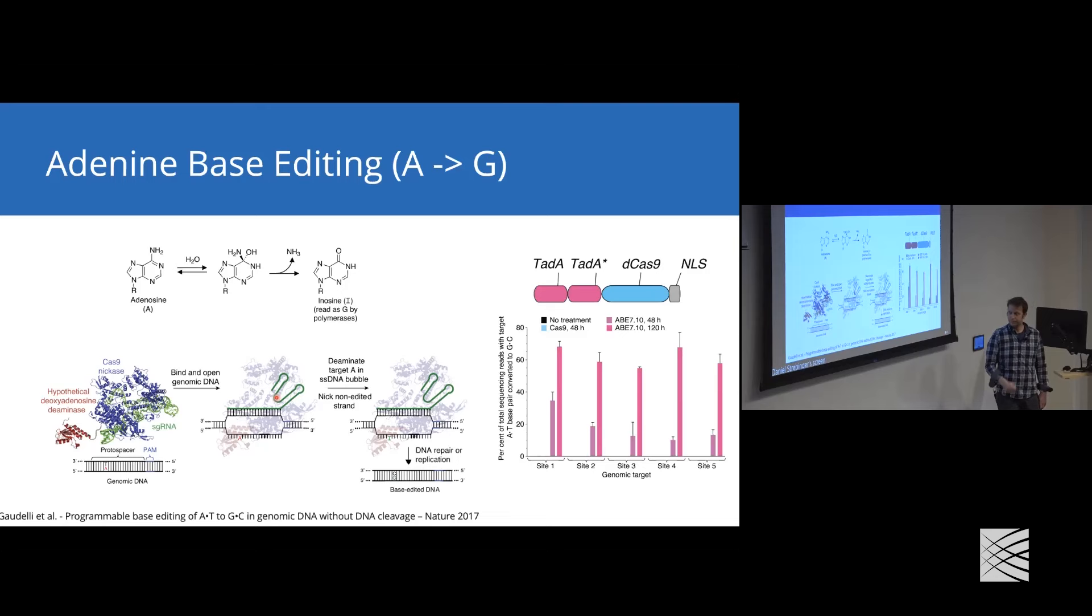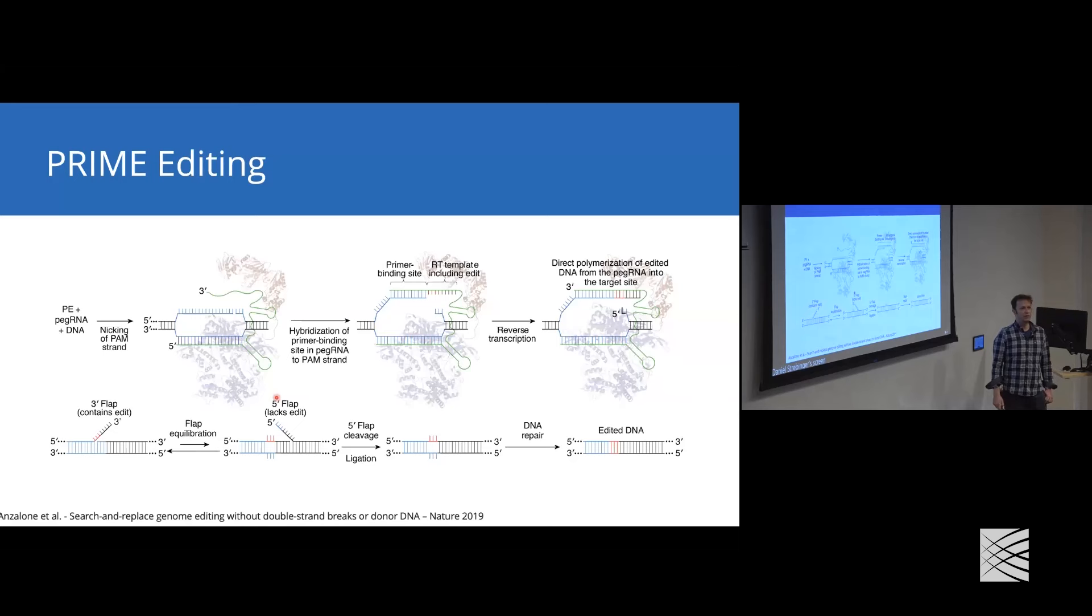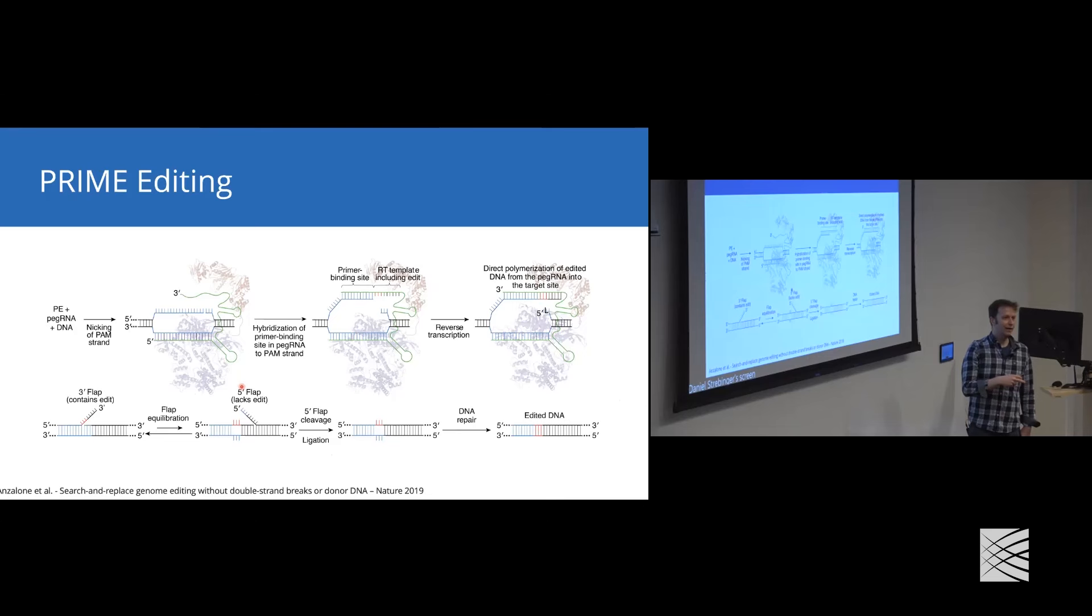One of the most recent things the Liu lab did in terms of base editing is the technology called prime editing, in which you use a very different approach to achieve conversions - changes of nucleotides for specific sequences. But the system is even capable of introducing small DNA fragments, generating small insertions. How the system was thought to work is if you use a prime editor and you fuse Cas9 to an RT, to a reverse transcriptase domain, and you provide a pegRNA, which is a prime editing guide RNA - basically a guide RNA with an extended three prime end.